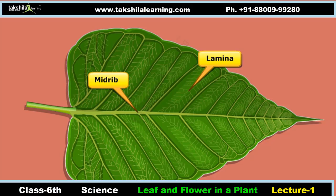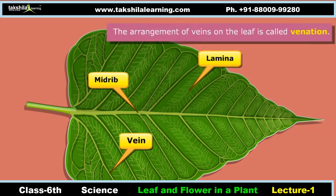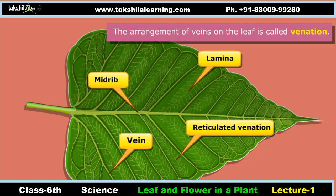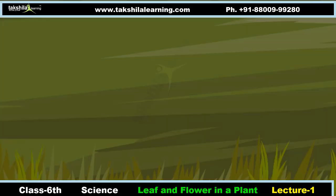The thick line present in the middle of a leaf is called the midrib. The thin lines branching from the midrib are the veins. The arrangement of veins on a leaf is called venation. When veins appear to branch from the midrib, the venation is called reticulated venation.